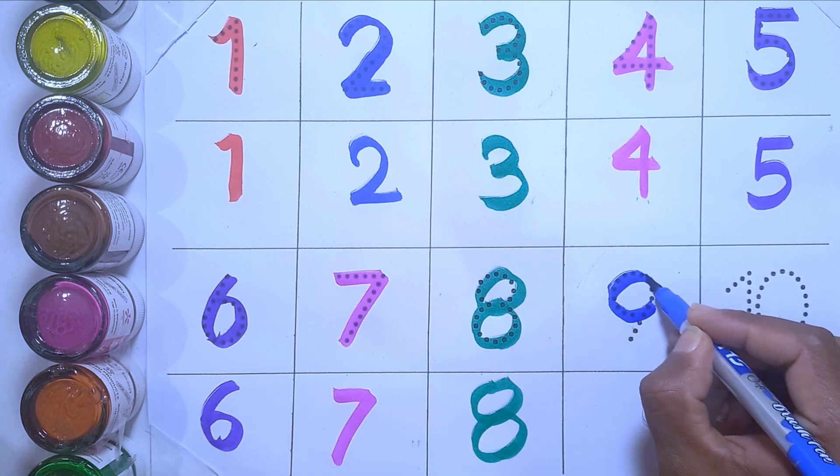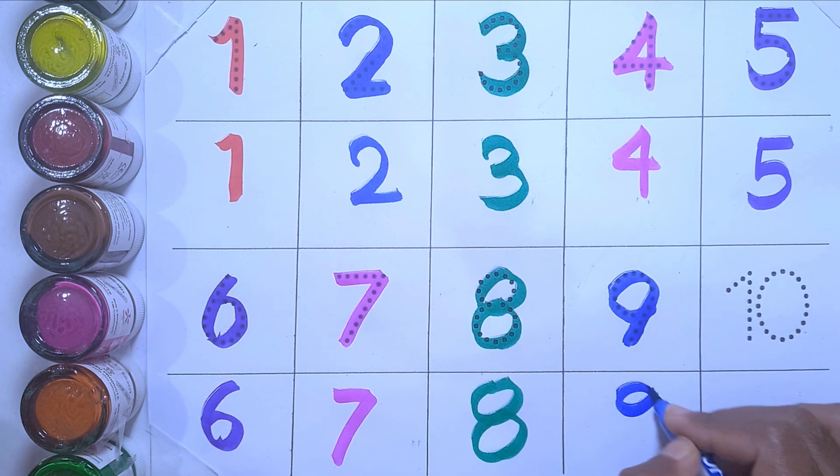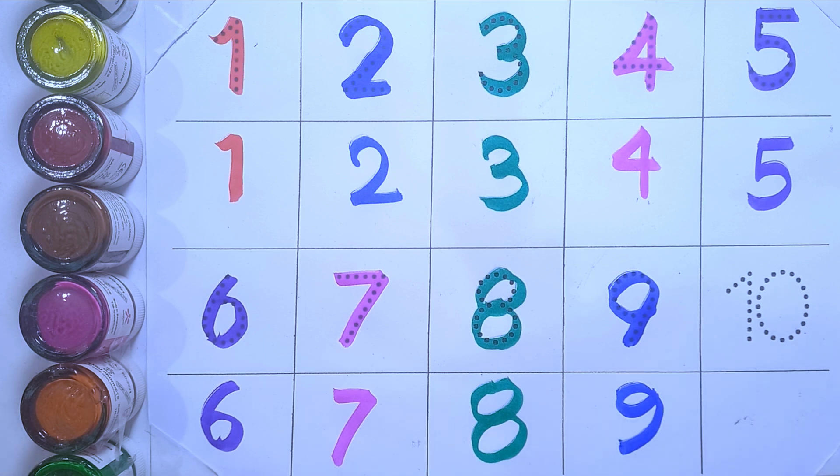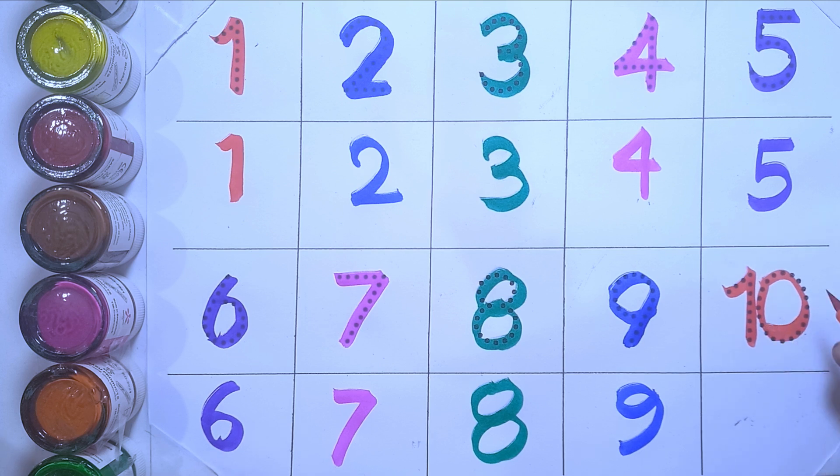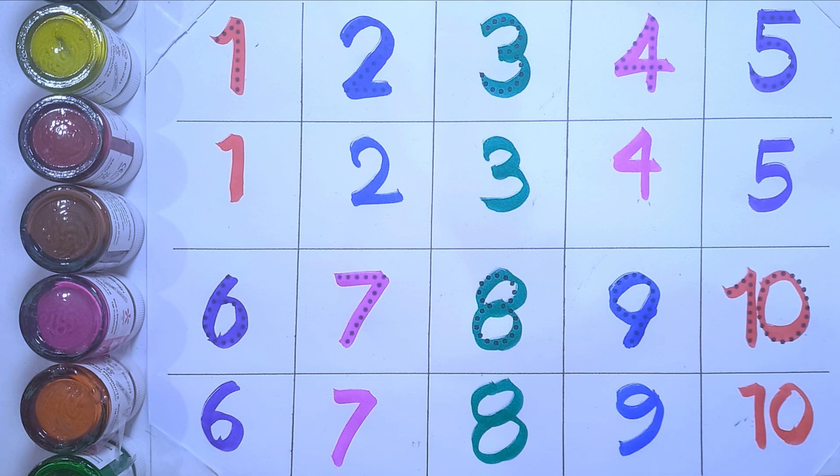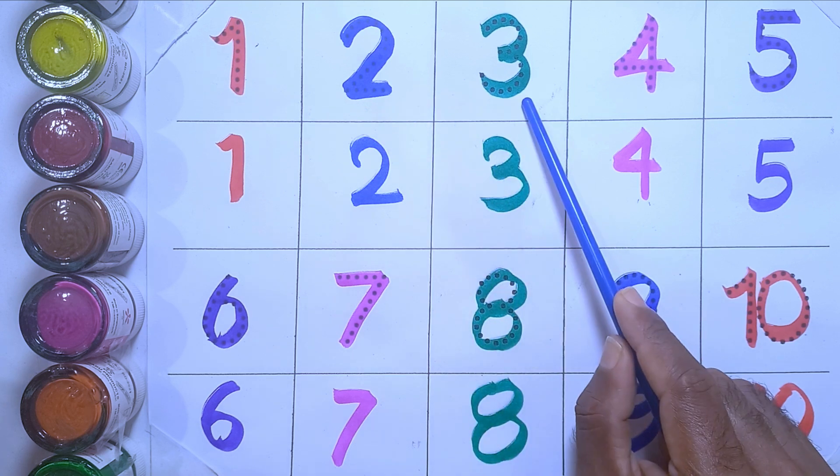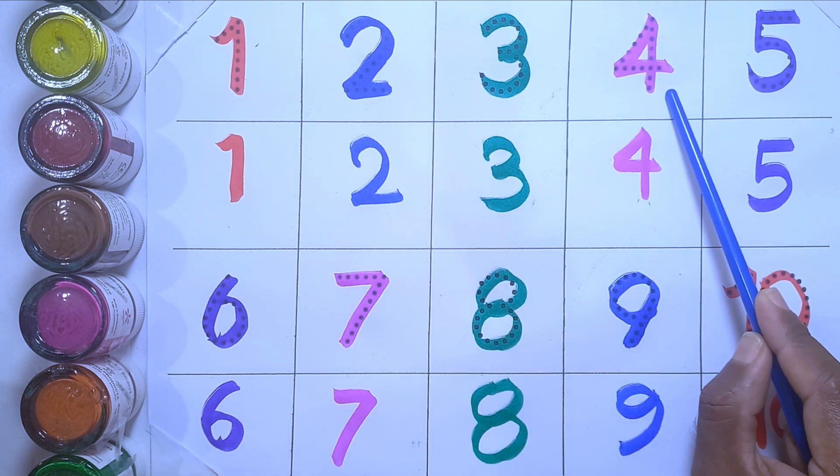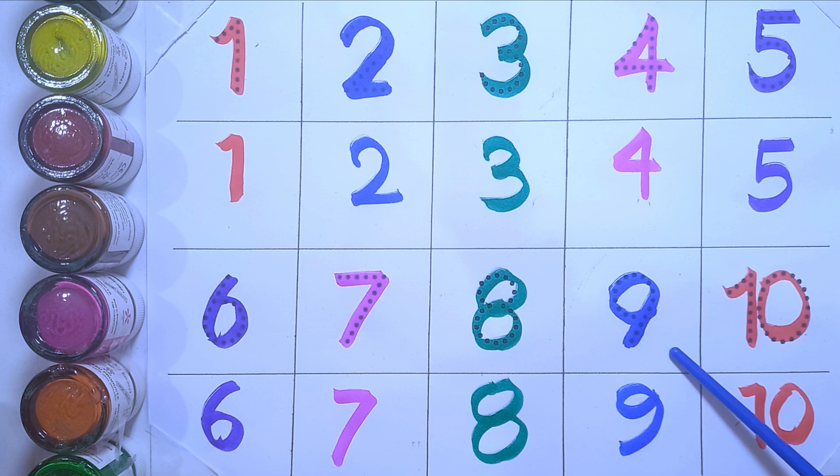Nine: n-i-n-e, nine. Ten: t-e-n, ten. Let's count again: one, two, three, four, five, six, seven, eight, nine, ten. Please like...